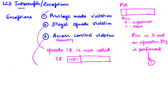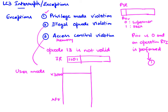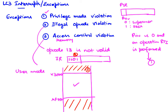On the LC3, when in user mode, user mode has a restricted accessible address space of x3000 to xFBFF. This is the only valid region you can access. Any access outside of this region — either below x3000 or above xFBFF — in user mode triggers an access control violation. An IR value of 1101 triggers the illegal opcode violation.